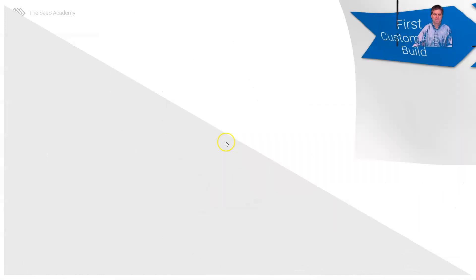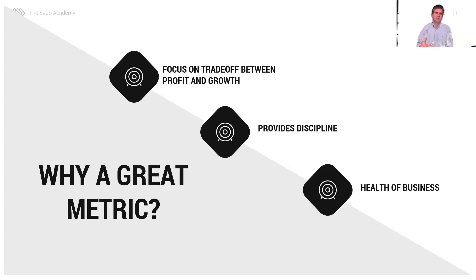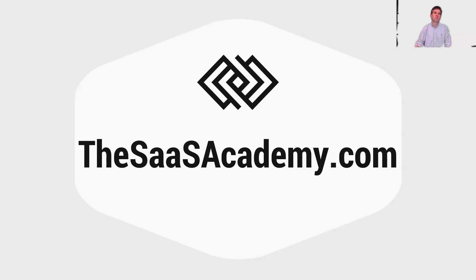Why is this a great metric? It gets us to focus on the trade-off between profit and growth, because it's very difficult to have both high profit and high growth. It provides discipline to understand where we land and execute on our financial strategy — whether that's high profit with less growth or vice versa. It's also a good metric to assess the overall health of the business for your SaaS executive team as well as outside investors. Thanks for joining me today. If you'd like to learn more SaaS metrics, check out sasacademy.com.